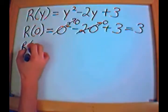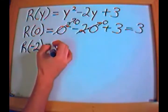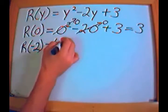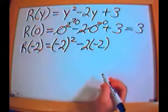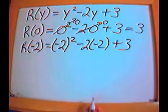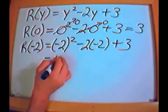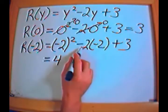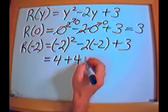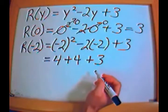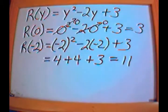What if we have r of negative 2? I plug in y equals negative 2: negative 2 squared minus 2 times negative 2, plus 3. Negative 2 squared is positive 4, and negative 2 times negative 2 is also positive 4. So I have 4 plus 4 plus 3, which is 4 plus 4 equals 8, plus 3 equals 11. So r of negative 2 equals 11.